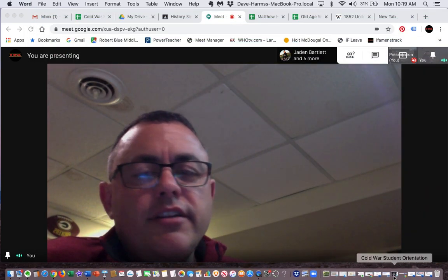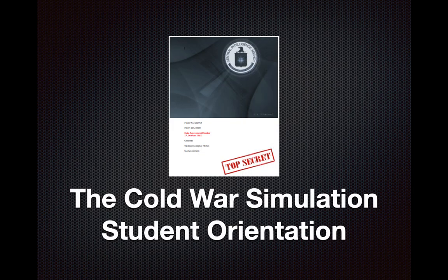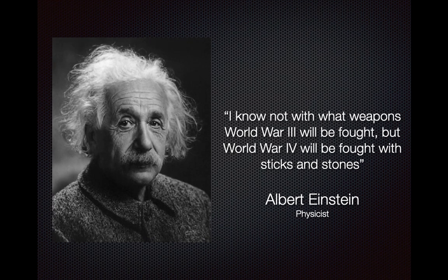Now we're going to go over the student orientation — feel free to ask questions. Albert Einstein, a famous German physicist who fled Nazi Germany, knew that the Germans were working on an atomic bomb. He said: 'I know not with what weapons World War III will be fought, but World War IV will be fought with sticks and stones.' Einstein is also the one who warned the United States that the Nazis were working on an atomic bomb.